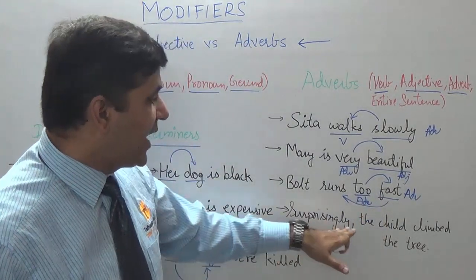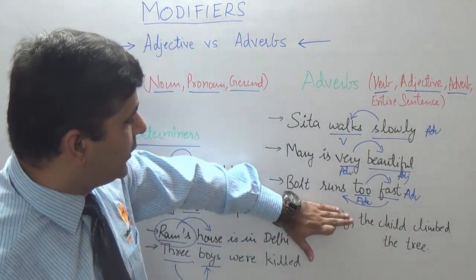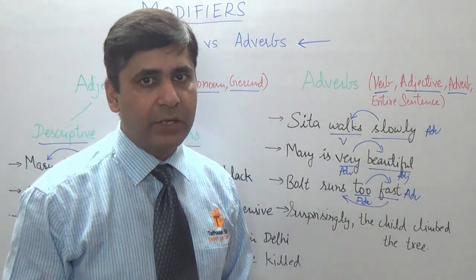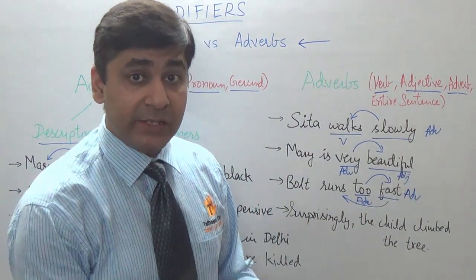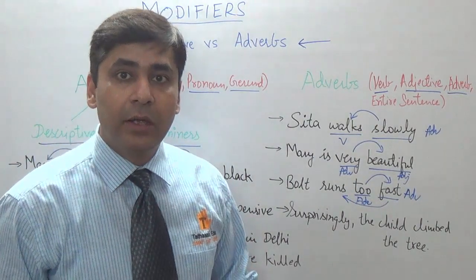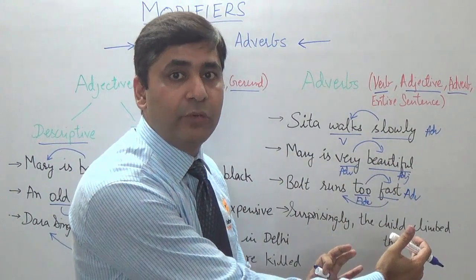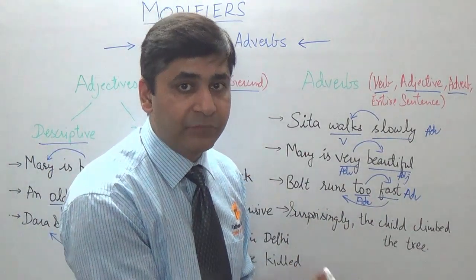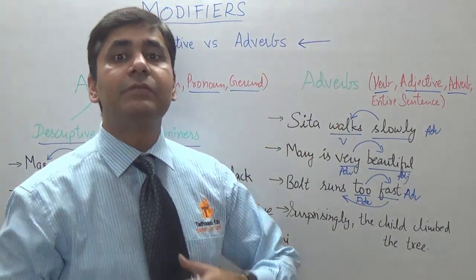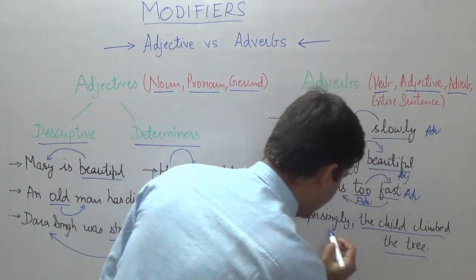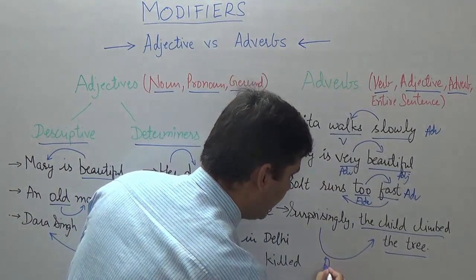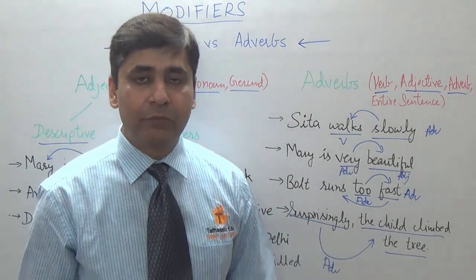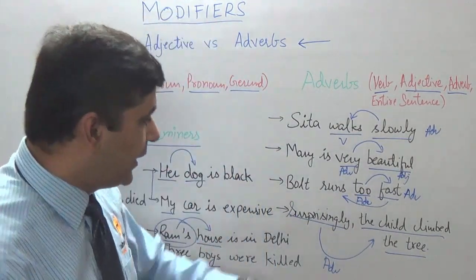Look at the last example: 'Surprisingly, the child climbed the tree.' Remove 'surprisingly' and you have a normal sentence. When you add 'surprisingly,' it gives additional information about the entire sentence — in general that child is not able to climb a tree, but surprisingly it did. So 'surprisingly' becomes an adverb that modifies the entire sentence. If it were a group of words it could be an adverbial phrase, clause, or prepositional phrase, but here it is one adverb.